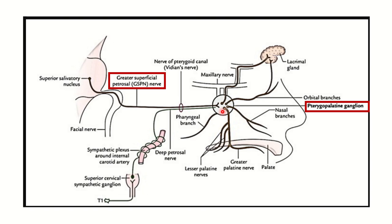From the superior salivatory nucleus, a nerve fiber comes via the greater petrosal nerve. The greater petrosal nerve conveys the signal to the pterygopalatine ganglion, and from the pterygopalatine ganglion it conveys to the lacrimal gland.